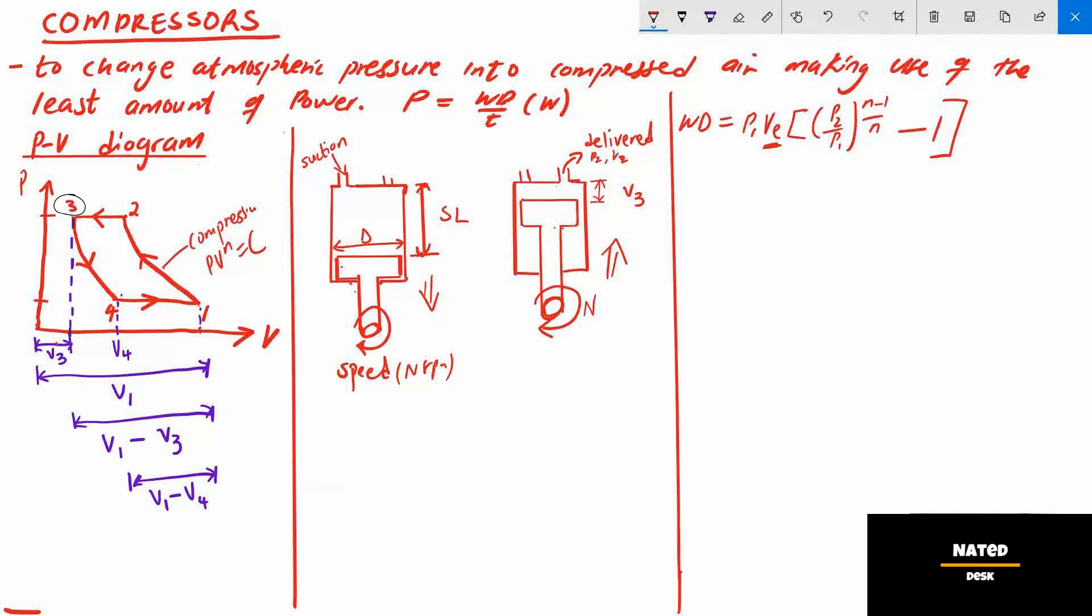And from here, the piston starts to move down which we refer to that movement as the inlet stroke. During suction, the air will expand according to the law PV exponent n is equal to constant c, to 0.4 V4.